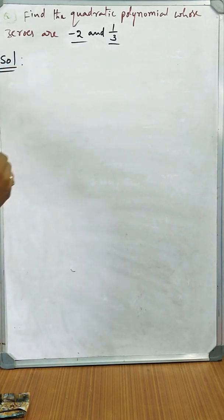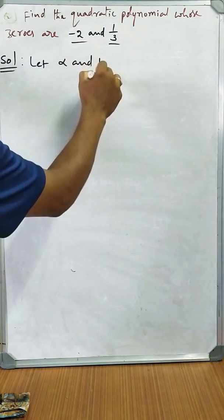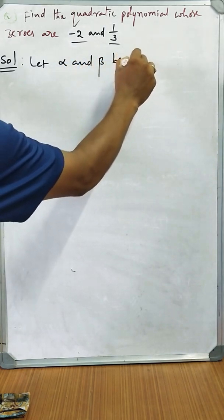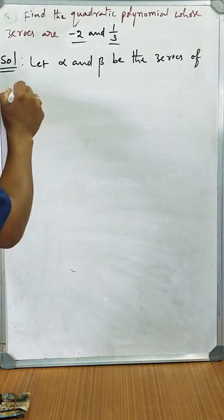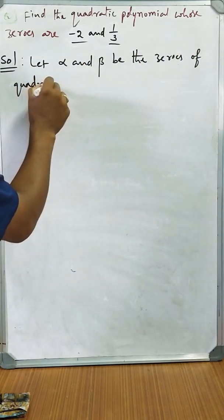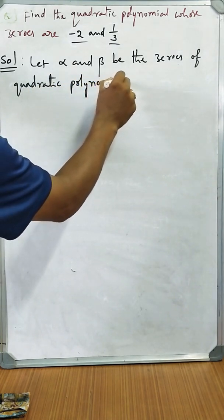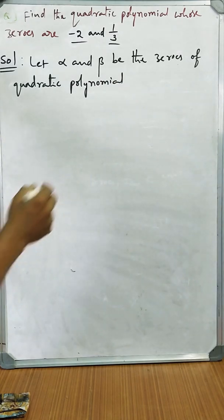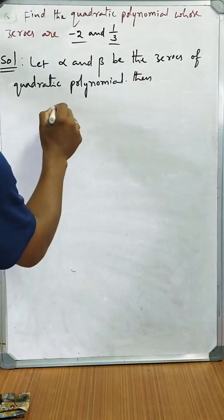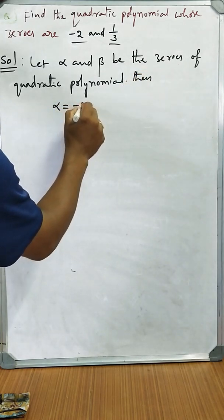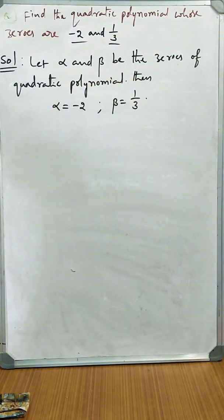Let's go in for the solution. Let alpha and beta be the zeros of the required quadratic polynomial. Then alpha equals -2 and beta equals 1/3.